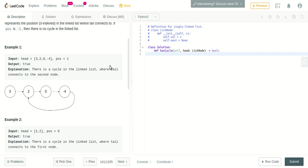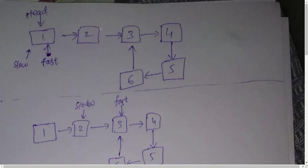Before writing the code, let me explain first. We will take two pointers: a slow and a fast pointer. Let me show in the diagram here. The difference between a slow pointer and a fast pointer is, as the name says, the fast pointer traverses faster than the slow pointer throughout the linked list. We define it such that the slow pointer traverses one node and the fast pointer traverses two nodes in every iteration.